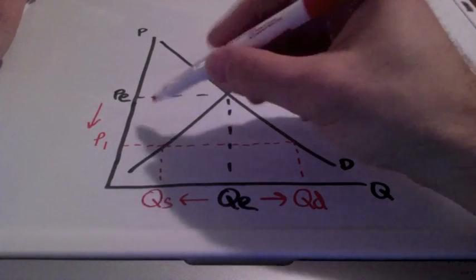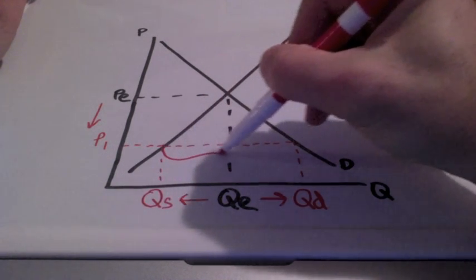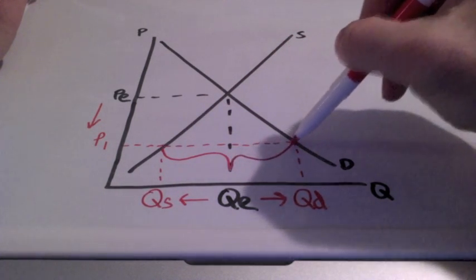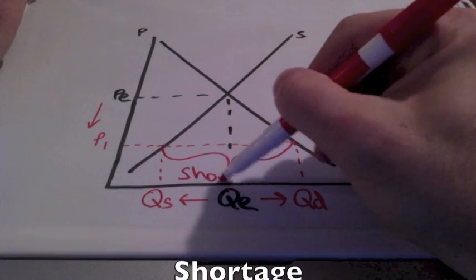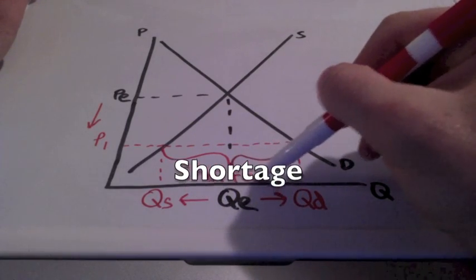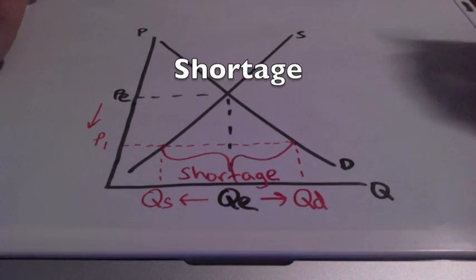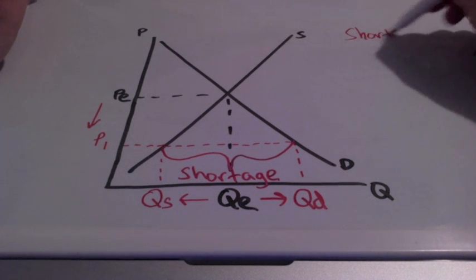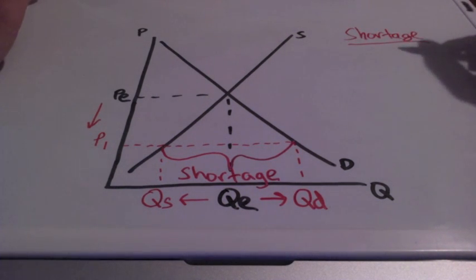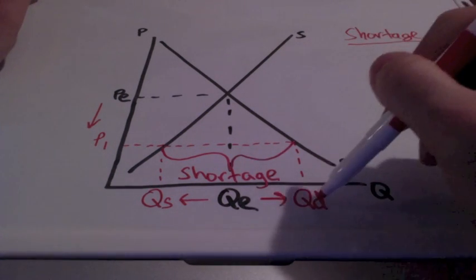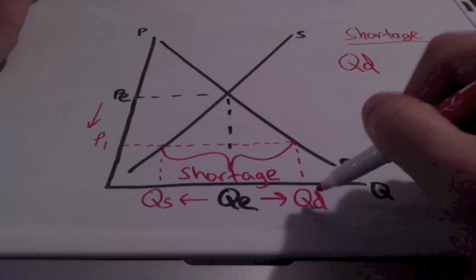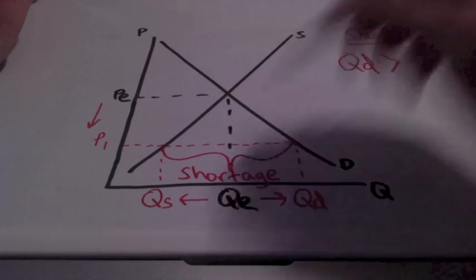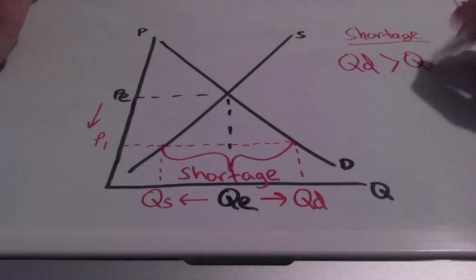So, this area between our quantity supplied and quantity demanded points is going to tell us that we have a shortage. A shortage is when the quantity made is smaller than what people want. So, as you can see, quantity demanded is greater than quantity supplied.